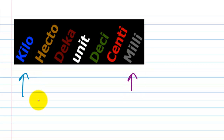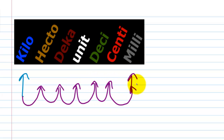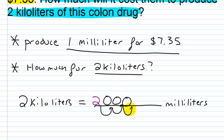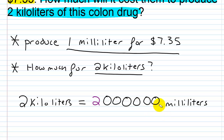We're going from kilo to milli — that's one, two, three, four, five, six places to the right. So we take the number two and move the decimal six places to the right. We add zeros: one, two, three, four, five, six. So you end up with two million milliliters equal to two kiloliters.